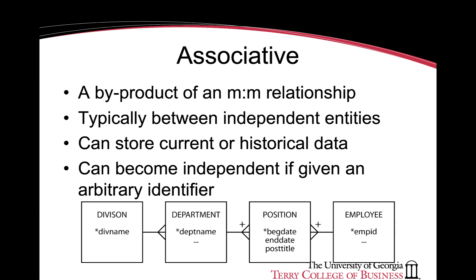Associative entities are by-products of many-to-many relationships and are typically between independent entities. These are typically used to store current or historical data and can be made independent if they are given an arbitrary identifier or their own primary keys.